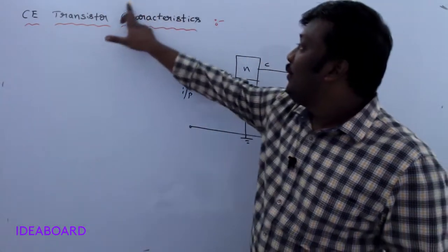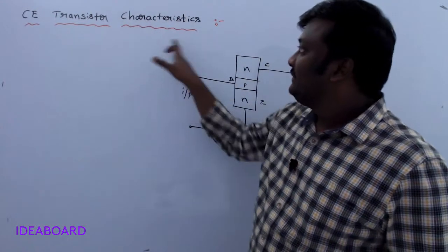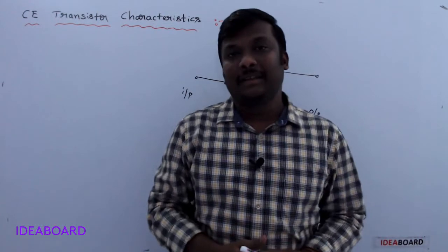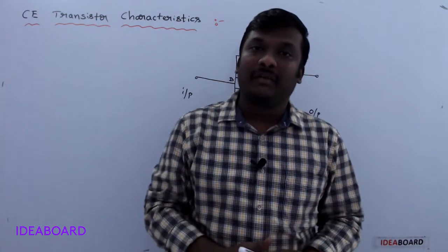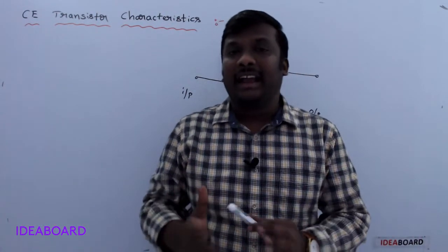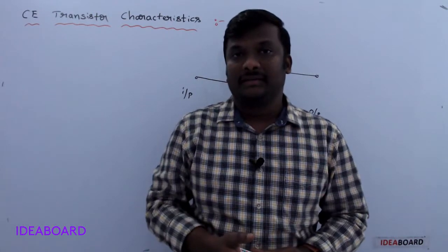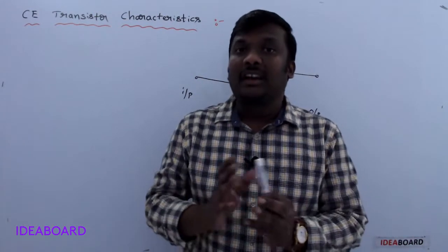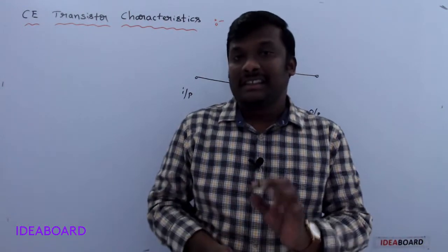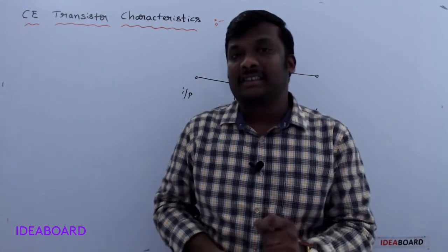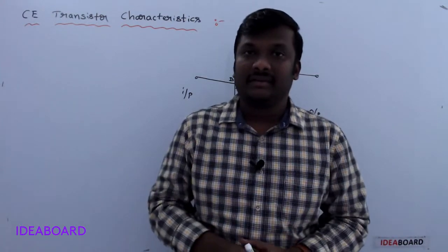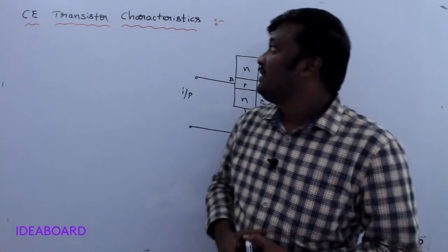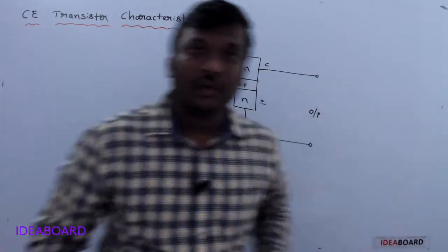Now we are discussing characteristics. Characteristics means drawing a graph between current and voltage. For a common emitter transistor, if you draw the graph between current and voltages, it is called transistor characteristics. Let us see the circuit diagram for the transistor characteristics.